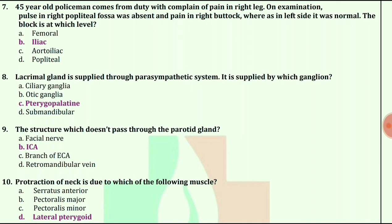Lacrimal gland is supplied through the parasympathetic system. It is supplied by which ganglion? The answer is pterygopalatine ganglion.